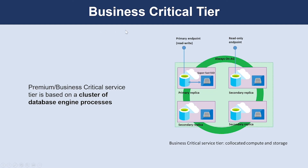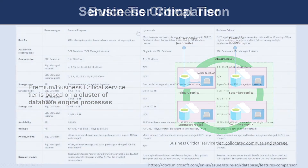The key reasons to choose the Business Critical service tier over General Purpose are: when you need low IO latency, frequent communication between application and database, long-running transactions that modify data, workloads with reporting and analytic queries, higher resiliency and faster recovery from failures, higher availability, and fast geo-recovery.